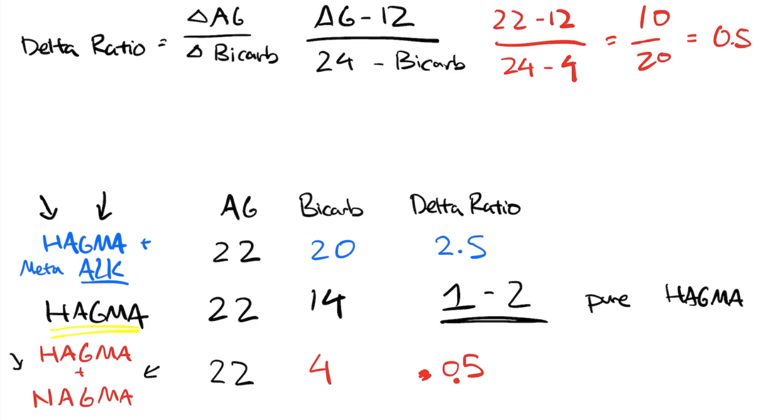If you have something greater than 2, then we think it's a HACMA plus an alkalosis, a metabolic alkalosis.